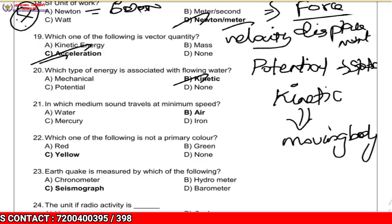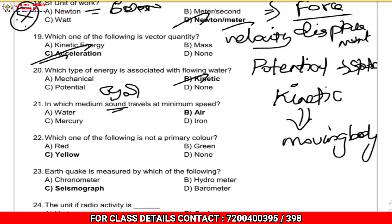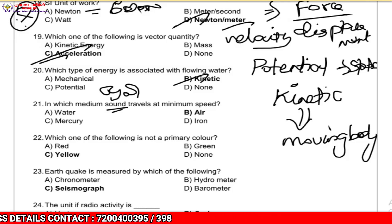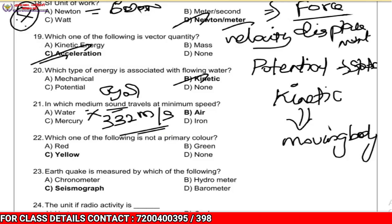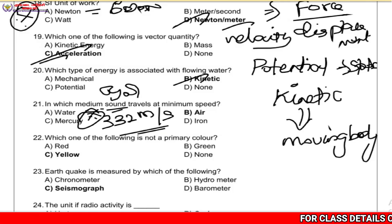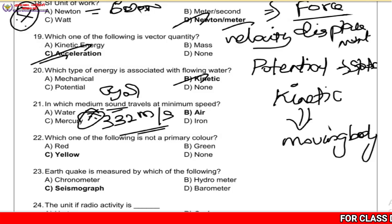In which medium does sound travel at minimum speed? Sound travels at about 332 meters per second in air. The minimum speed of sound is in air compared to other media.